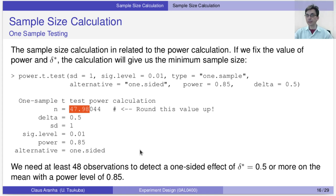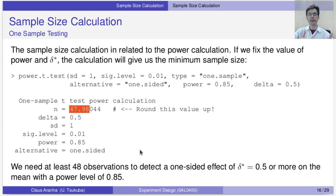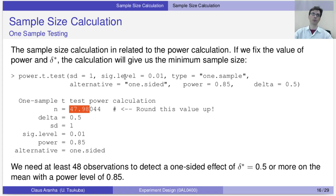If 48 samples is too much, we can recalculate with a lower power, a lower significance level, or a higher delta. We can change this design until we have an experiment that satisfies us both in terms of cost and in terms of the capacity to answer our scientific question. Notice that all this calculation is done before we collect data — this is in the design stage of the experiment.